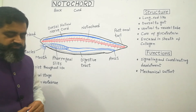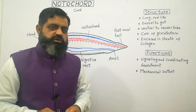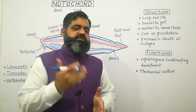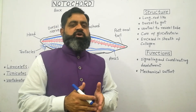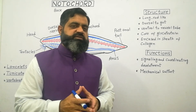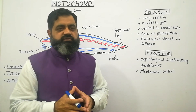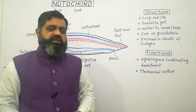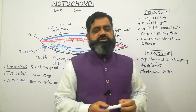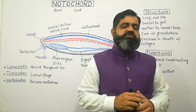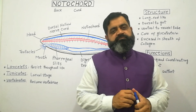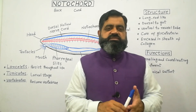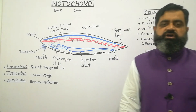Looking at the functions of the notochord, there are two main important functions. First, it helps in signaling and coordinating the development process. Since the notochord is present at the central axis of the body, signals originate from it and all body organs are constructed around it — anterior, posterior, dorsal, ventral, and lateral sides. The second function is mechanical support: acting as a hydrostatic skeleton, the proteinaceous material in the vacuolated cells helps to stiffen and give flexibility to the body, providing rigidity to animals like lancelets that do not have a vertebral column.